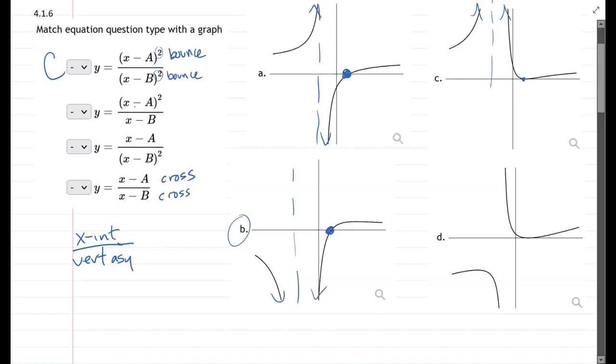So the B graph, the vertical asymptote goes down and down, and so that's a bounce vertical asymptote.